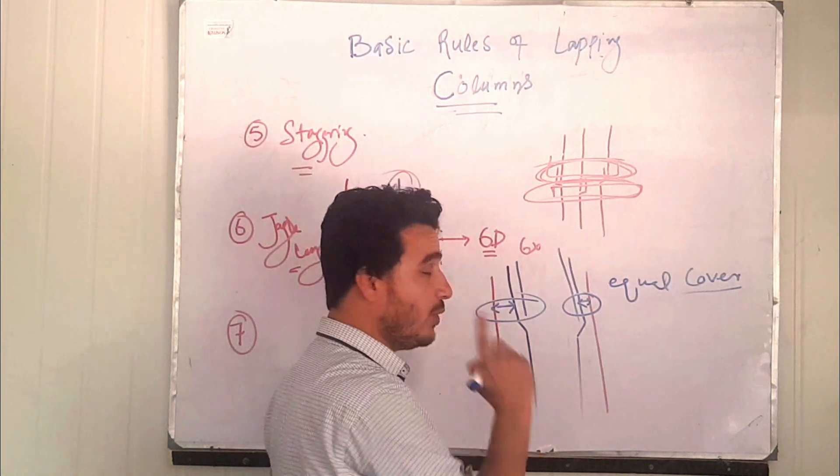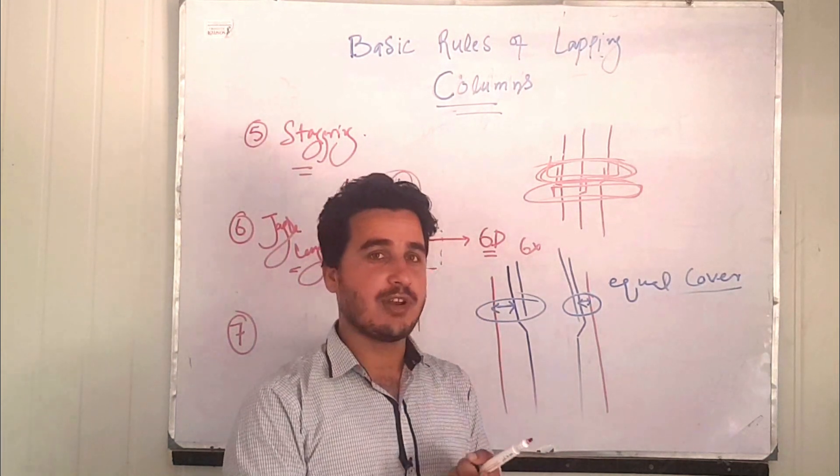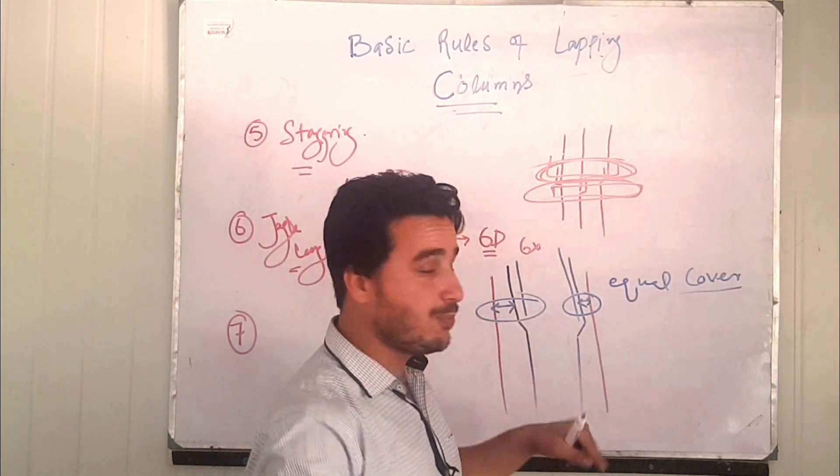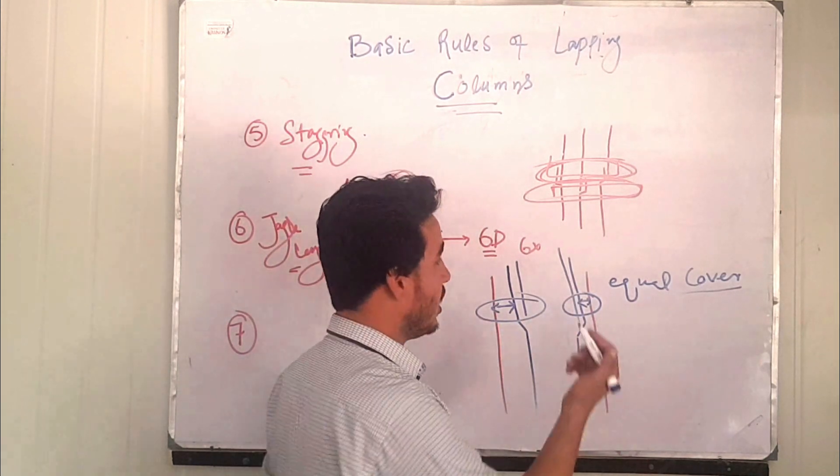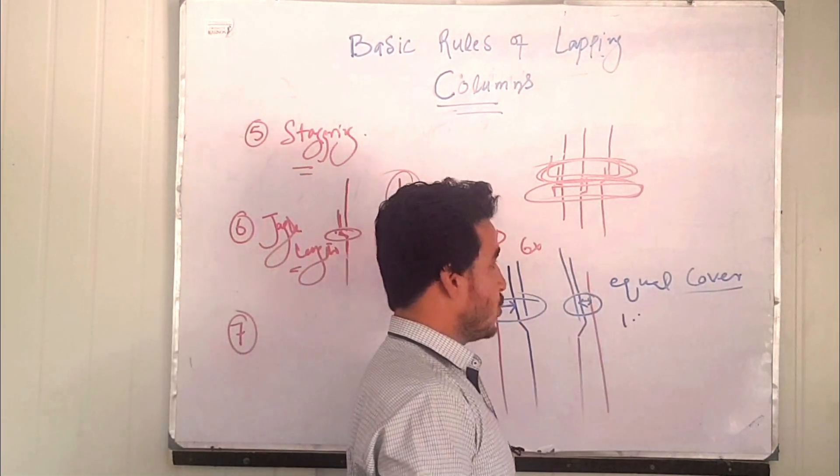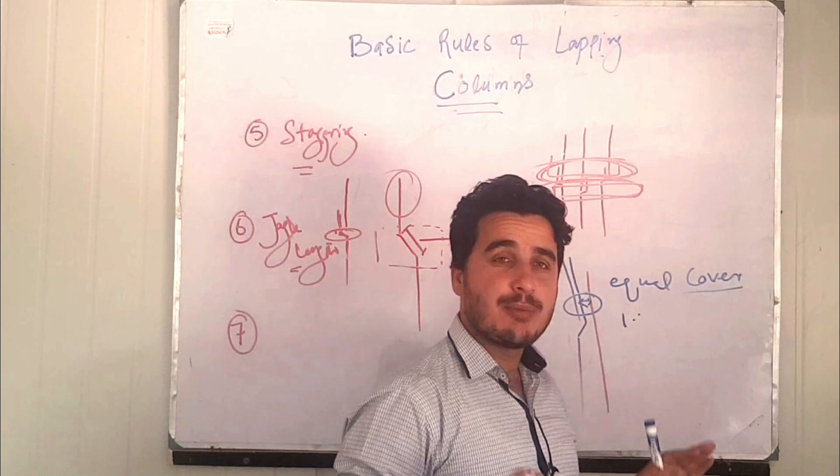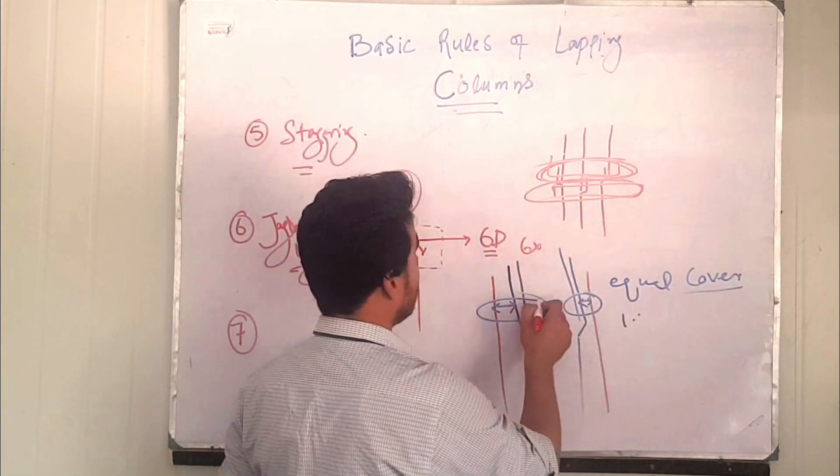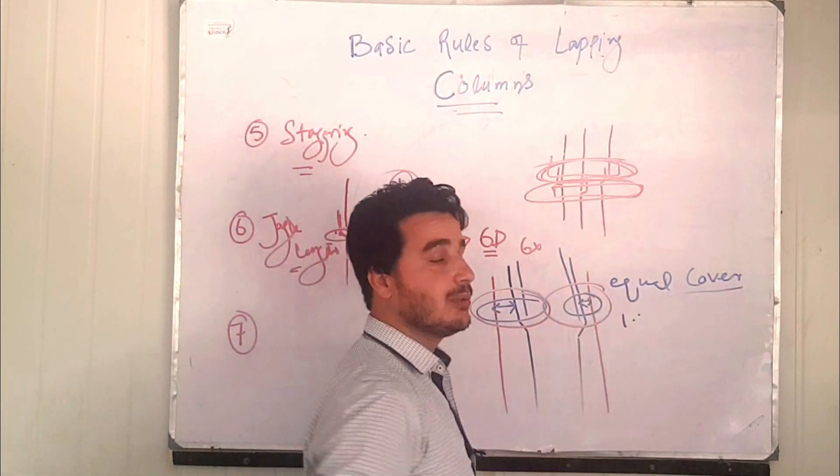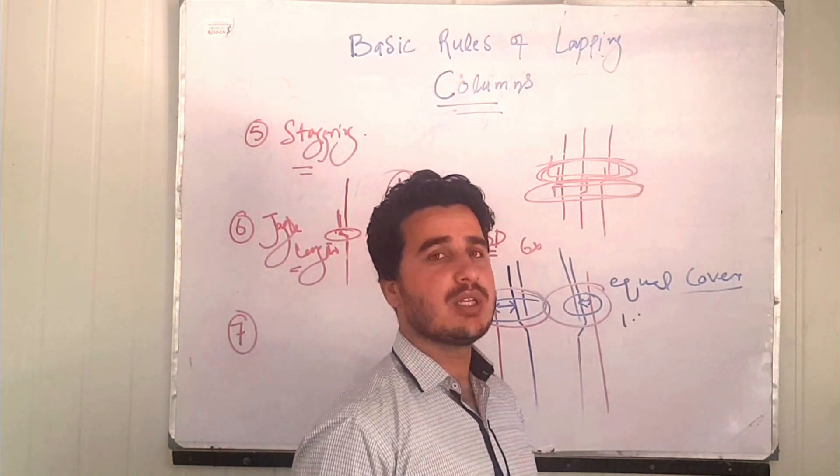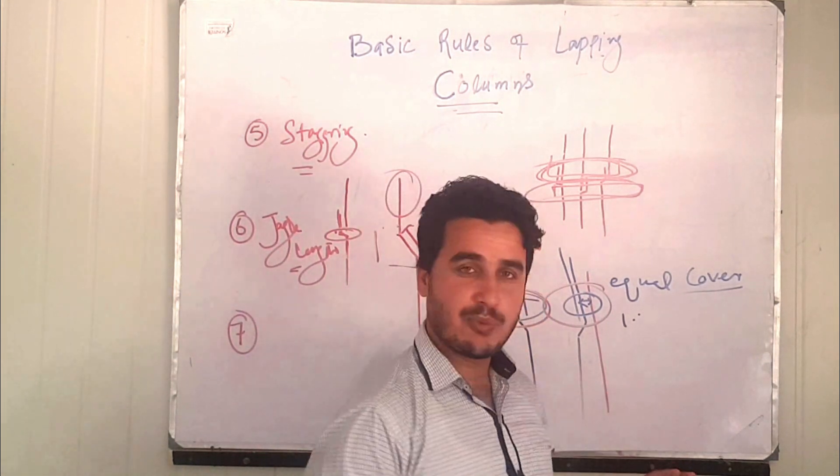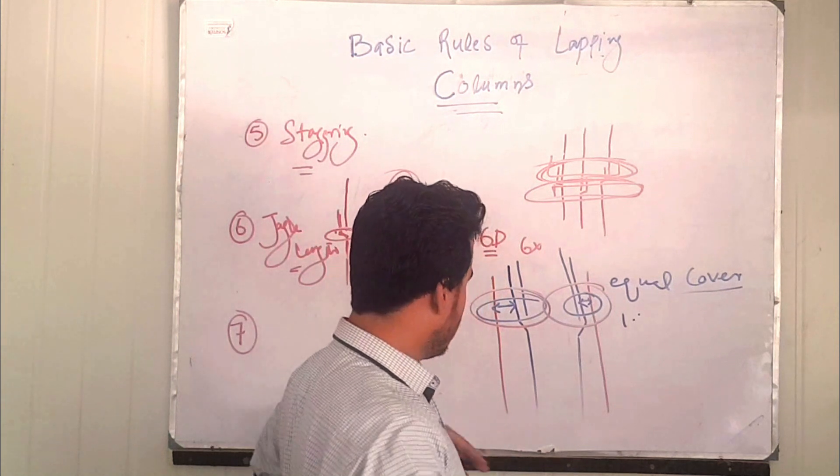You will have to place the bars in such a way that concrete core at both these sides are equal. Equal core is important on both sides so that this reinforcement and this reinforcement might get the equal stress during the loading phenomena. So these were some basic rules.